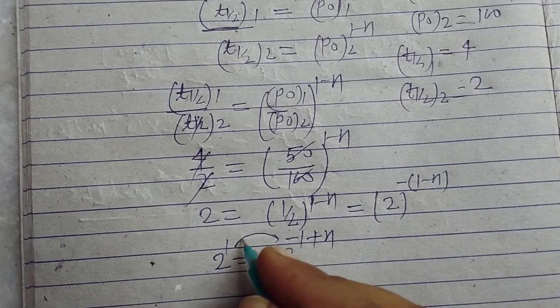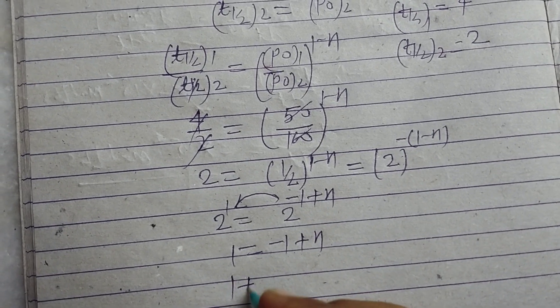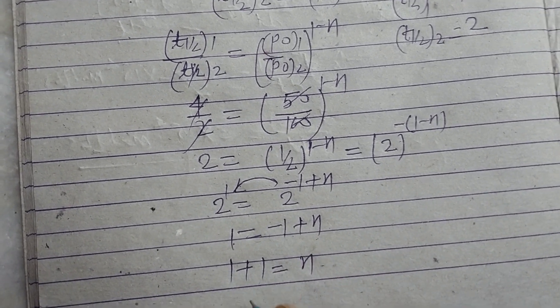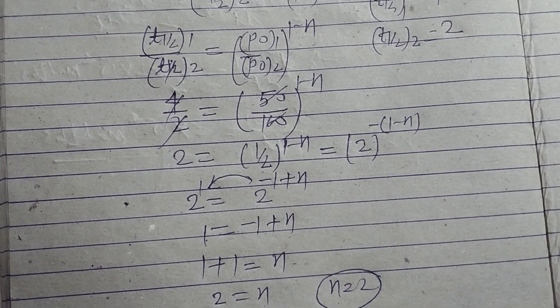Now comparing the powers, because the bases are same, 1 equals minus 1 plus n. Bringing minus 1 to the left side, 1 plus 1 equals n, so 2 equals n. Therefore, the order of the reaction is 2.